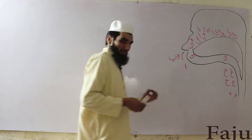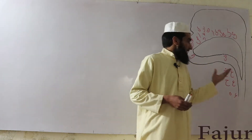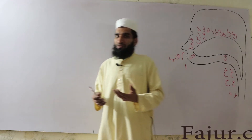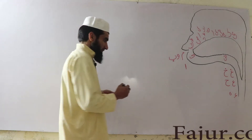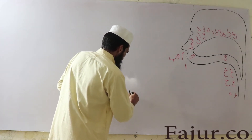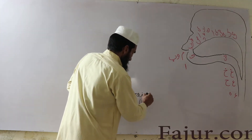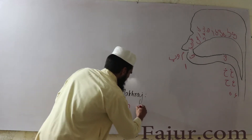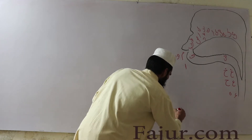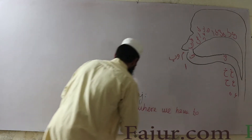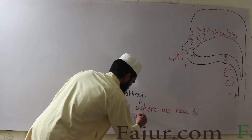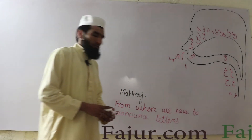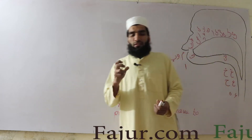The objective of this sketch is to understand that we must pronounce Arabic letters from their origin place, which is called Makharaj. Makharaj basically means the place from where we pronounce a letter.